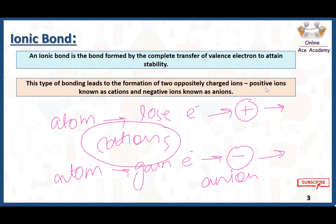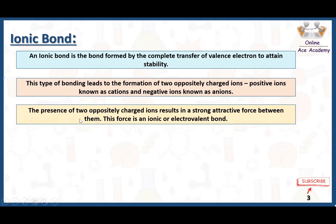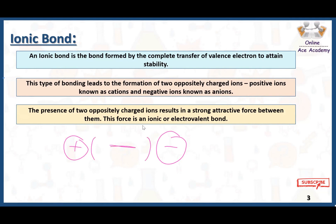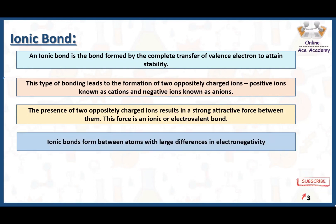The presence of two oppositely charged ions results in a strong attractive force between them. This force is an ionic or electrovalent bond. Because positive charge and negative charge are opposite, they attract each other, and a bond forms between them — called ionic bond or electrovalent bond. The compound formed as a result is called an ionic compound.